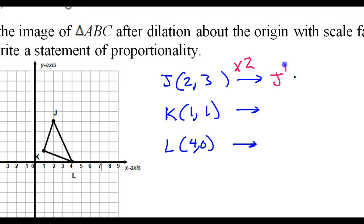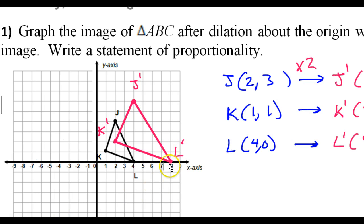So then we will get J prime which is going to be 4 comma 6, and K prime which will be 2 comma 2, and L prime which will be 8 comma 0. Alright, so that would look like this.